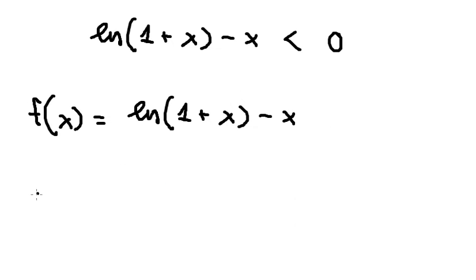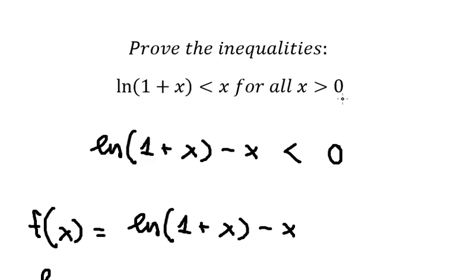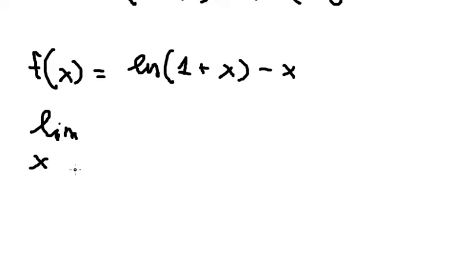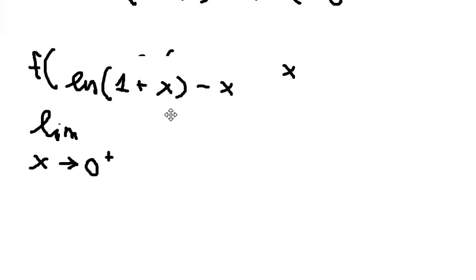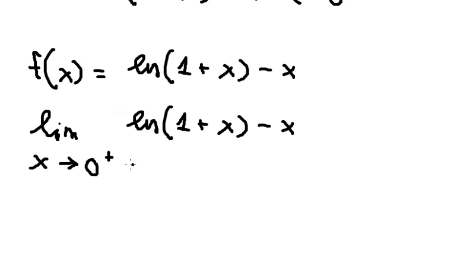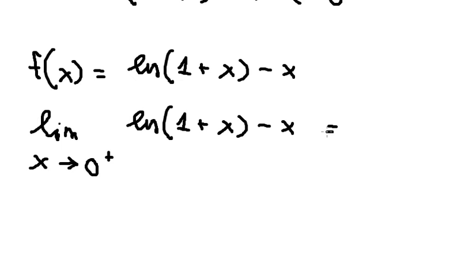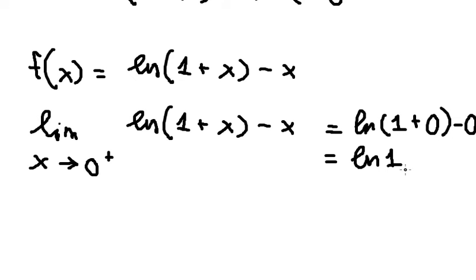Now we need to find the limit. Because x is greater than 0, we need to find x approaching 0 from the right. So when we put 0 in here, we have ln(1 + 0) minus 0, which gives ln(1), and we have 0.